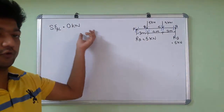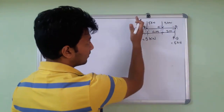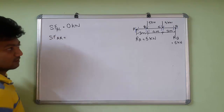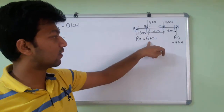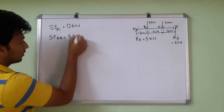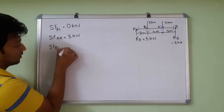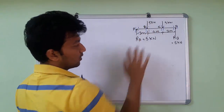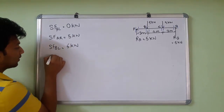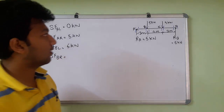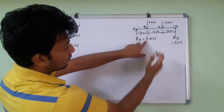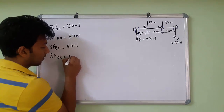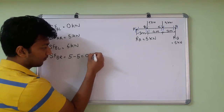SF BL — considering only this left portion, only RA of 5 kN acts, so SF BL equals 5 kN. SF BR — here we have RA of 5 kN upward and the 5 kN load downward, which is negative. So 5 minus 5 gives 0 kN.